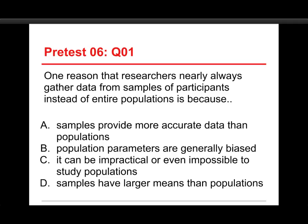The first question on this test is: one reason that researchers nearly always gather data from samples of participants instead of entire populations is because A, samples provide more accurate data than populations; B, population parameters are generally biased; C, it can be impractical or even impossible to study populations; or D, samples have larger means than populations. The answer to this one is C — it's because it can be impractical or even impossible to study populations.